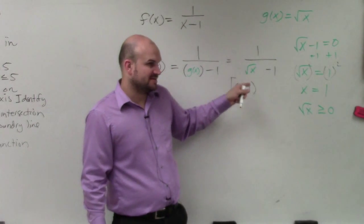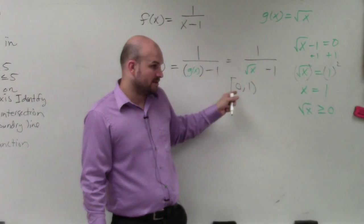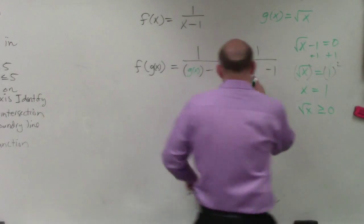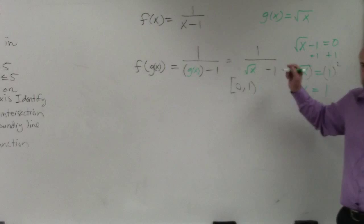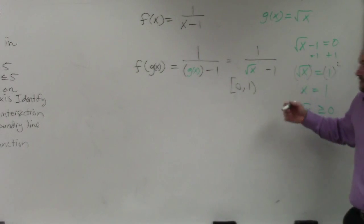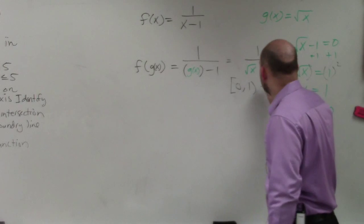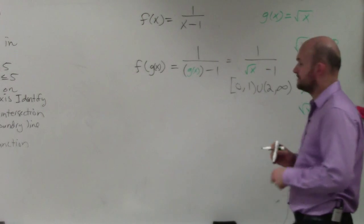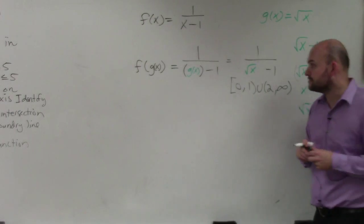So 1 is a parenthesis, not part of my domain. 0 is, because you can plug in 0. Then what about like 4? Can you do other numbers greater than 1? Yes, you can do 4. Square root of 4 is 2. 2 minus 1 is 1. So you do union, 2 to infinity. And that's what your domain would look like.